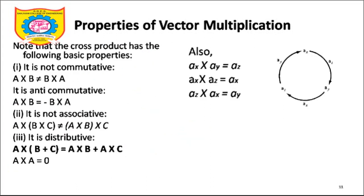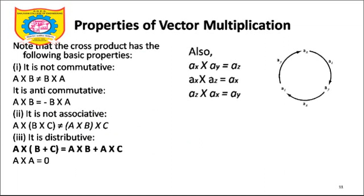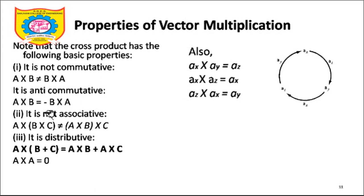Going to the cross product now. Cross product is more difficult to solve when it comes to analysis. Let's understand the properties of vector multiplication and cross product. Cross product is not commutative. A̅ cross B̅ is not equal to B̅ cross A̅ — this is an important thing. It was applicable in dot product, but not necessarily in the cross product.